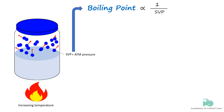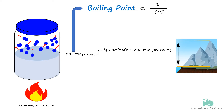Another relationship we notice here is that atmospheric pressure must equal the SVP to make the liquid agent boil. So if the atmospheric pressure is low, as at high altitude, vapor pressure easily reaches the lower outside pressure, allowing the agents to boil sooner. We can deduce that the most volatile agents are those with the highest SVPs at room temperature, and at any given temperature, these agents also have the lowest boiling points.